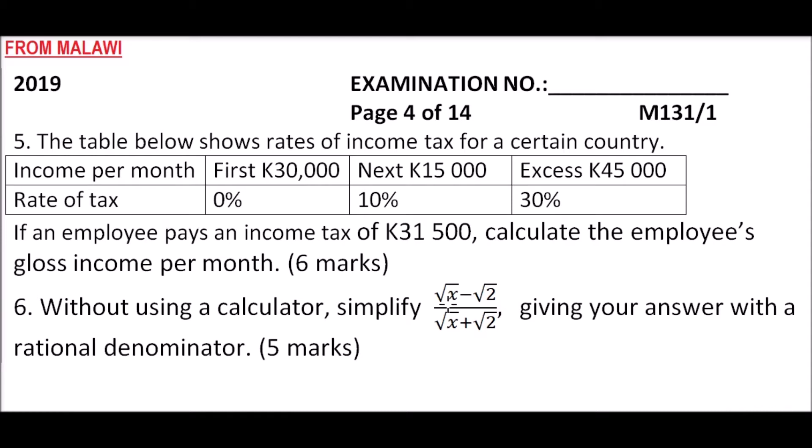The table gives income per month and the rate of tax. For the first K30,000 you don't pay any tax. For the next K15,000 you pay 10%. For excess over K45,000 you pay 30%. An employee pays an income tax of K1,500. Calculate the employee's gross income per month.